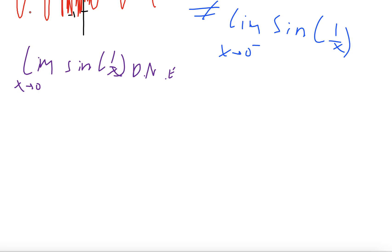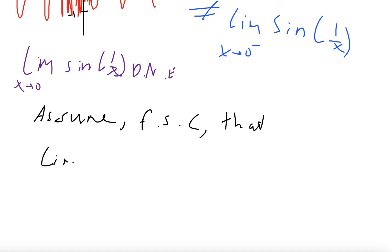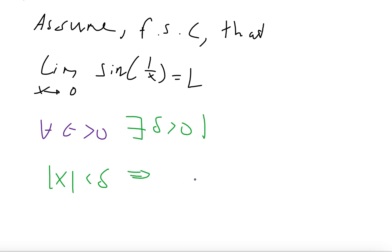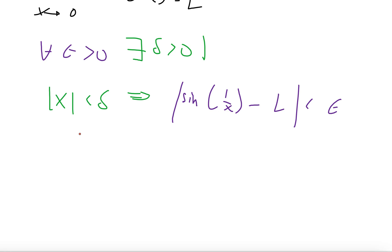Remember the negation of epsilon-delta: if we can find just one epsilon that will fail to produce a delta for which the function stays within epsilon of the limit, then we're done. So we do what's called a proof by contradiction — we assume a statement is true, find a contradiction, and disprove it. For the sake of contradiction, assume that the limit as x goes to zero of sine(1/x) is a finite real value L. Then by definition of a limit, for all epsilon greater than zero, there exists delta greater than zero such that if |x| is less than delta, then sine(1/x) is within epsilon of its limit. The key is we need to find just one epsilon for which this fails.